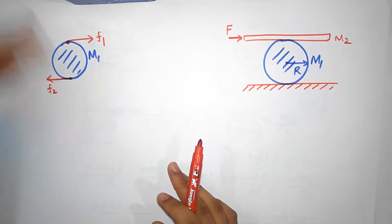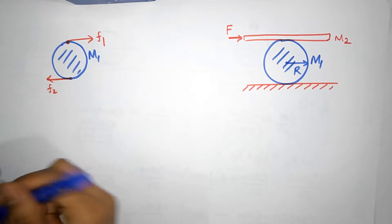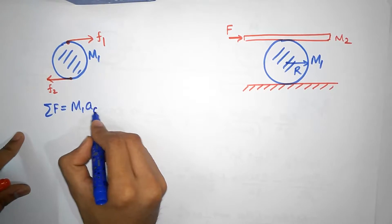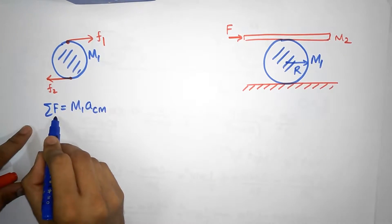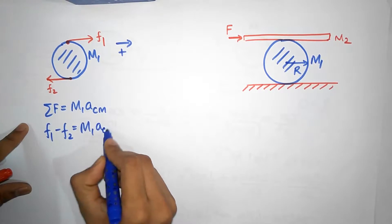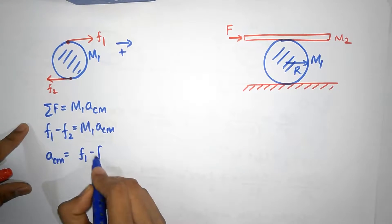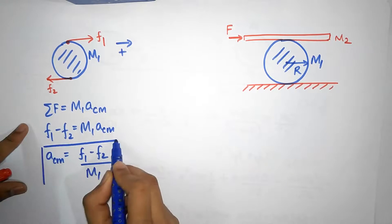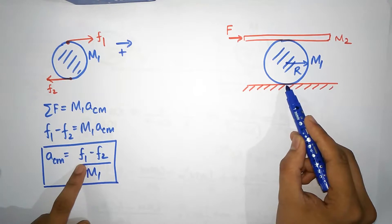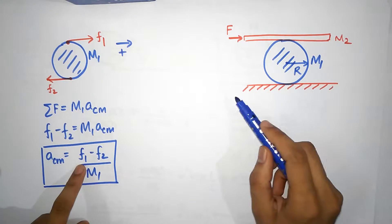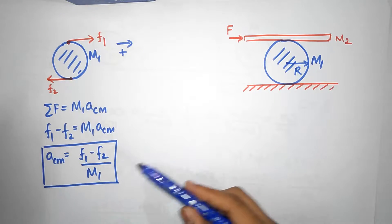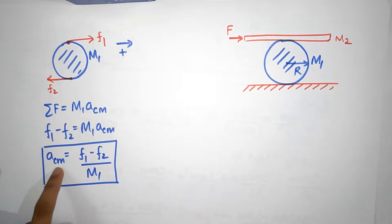There's no vertical acceleration, so applying Newton's second law horizontally to the cylinder: net force equals m1 times a_cm. Taking right as positive, f1 minus f2 equals m1 times a_cm, so a_cm equals (f1 minus f2) divided by m1. Note: we don't substitute values for f1 and f2 yet — static friction is self-adjustable and can be any value between zero and mu_s times N.